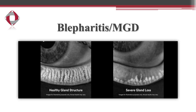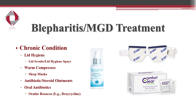This is another photo. The photo on the left shows healthy gland structure. On the right, this is a patient with chronic inflammation where you can see meibomian gland atrophy and dropout due to chronic untreated blepharitis.